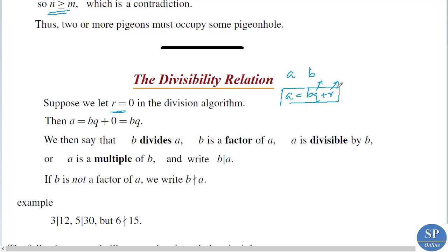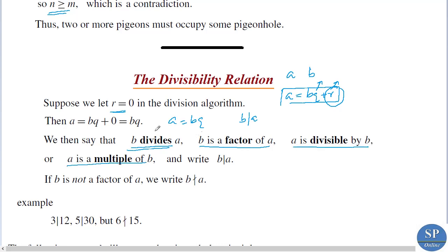When the remainder r equals zero, a equals bq, that is a equals b times q. In this case we say b divides a. We can also say: b is a factor of a, or a is divisible by b, or a is a multiple of b.